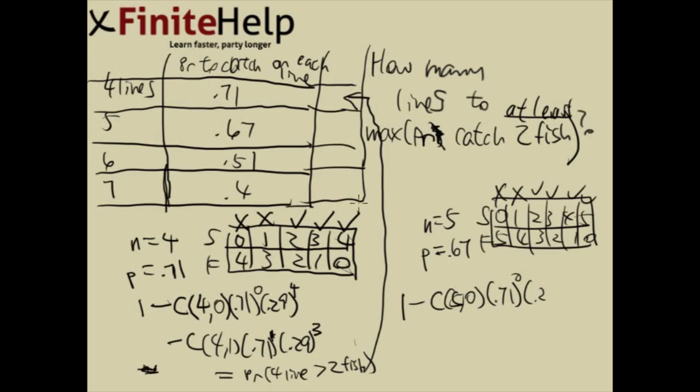And this is not going to be 0.71 anymore. So p equals 0.67. Here is going to be 0.67 to the 0. And then 0.23 is going to be its complement to 1. So here we have, we are going to have 0.33 to the 5th. And minus 5 choose 1, 0.67 to the 1. And see, there is 1 success, 4 failures.